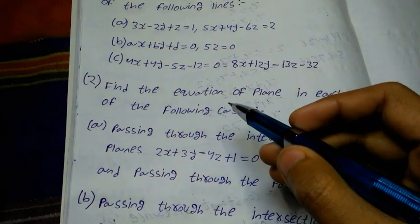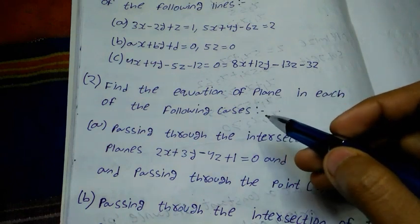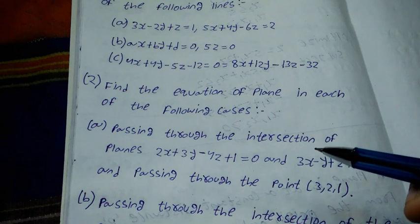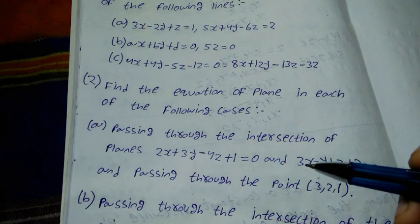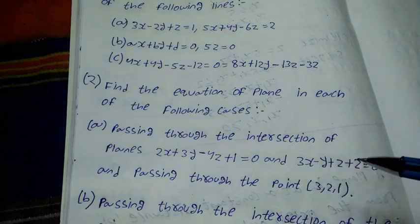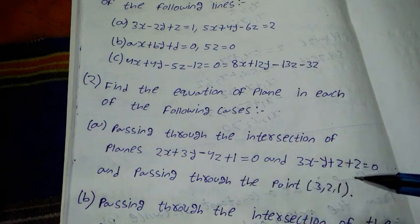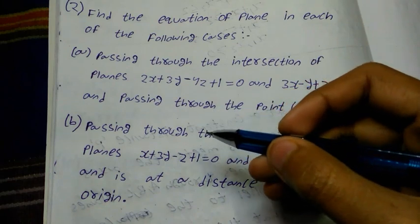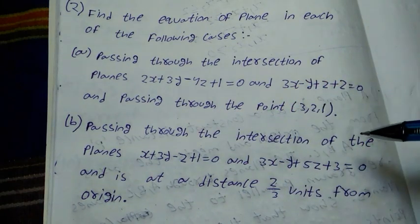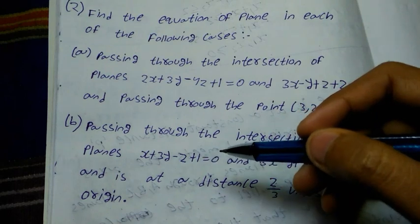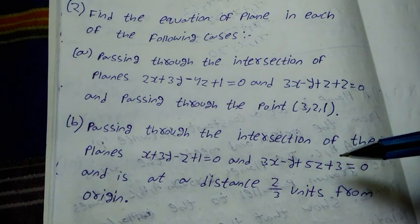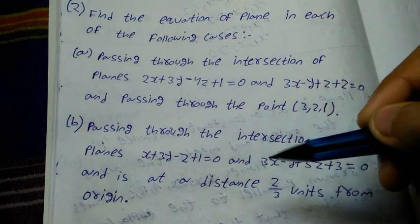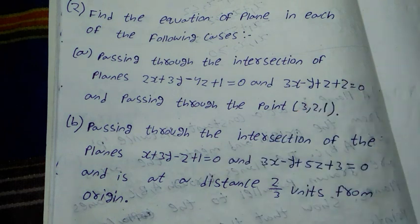Number 2 question: find the equation of a plane in each of the following cases. (a) Passing through the intersection of planes 2x plus 3y minus 4z plus 1 equal to 0 and 3x minus y plus z plus 2 equal to 0, and passing through the point (3, 3, 1). (b) Passing through the intersection of planes x plus 3y minus z plus 1 equal to 0 and 3x minus y plus 5z plus 3 equal to 0, and at a distance 2/3 units from the origin.